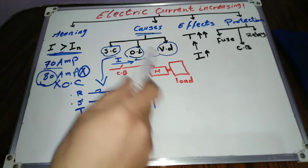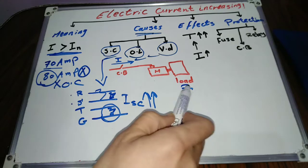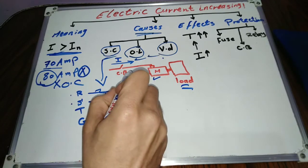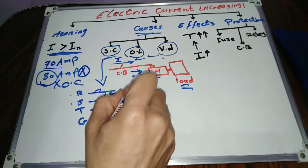Overload happens when the load itself increases above the allowable design. Voltage drop induction motors draw overcurrent if the applied voltage drops below the motor operation value.